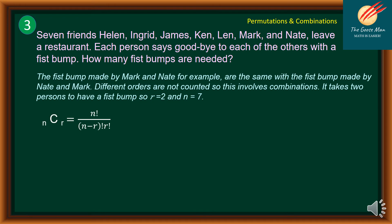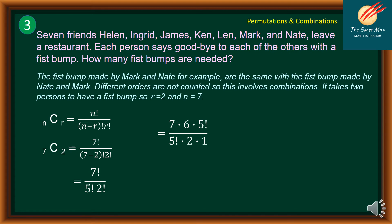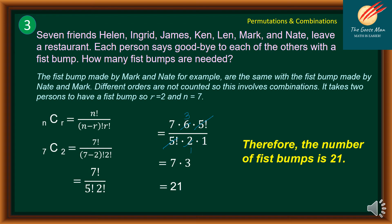Using the formula nCr equals n factorial divided by n minus r factorial times r factorial, we substitute: 7C2 equals 7 factorial all over 7 minus 2 factorial times 2 factorial, which simplifies to 7 factorial over 5 factorial times 2 factorial. Expanding: 7 times 6 times 5 factorial over 5 factorial times 2 times 1. Factoring out 5 factorial and dividing 6 by 2 gives 3, so we have 7 times 3, which equals 21. Therefore, the number of peacebombs is 21.